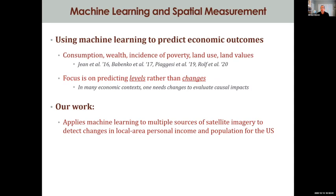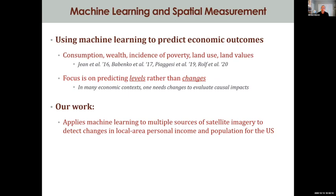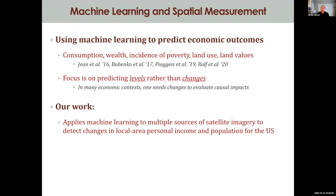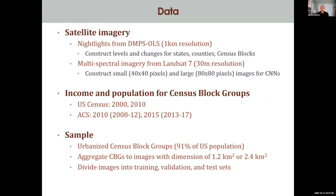In light of those disadvantages, there's a growing literature applying machine learning to daytime satellite imagery to predict economic outcomes. This work has looked at consumption, wealth, incidence of poverty, land use, and land values, enhancing our capability of using convolutional neural networks to generate data on economic values where data are otherwise hard to get. However, much of this work is about predicting levels rather than changes. When it comes to impact evaluation, what we want to know is the impact of those changes. So in this paper, we ask: how well do nightlights versus a machine learning-based approach using daytime satellite imagery predict changes in income and population for varying geographies in the US?